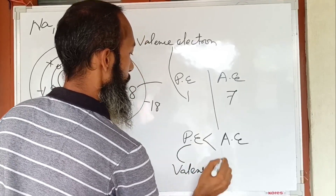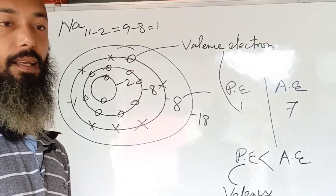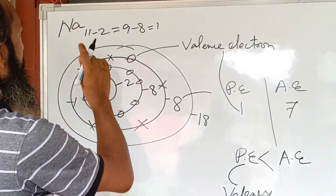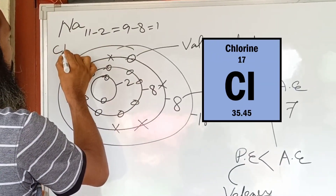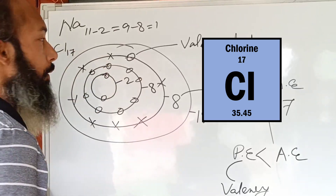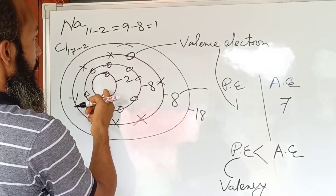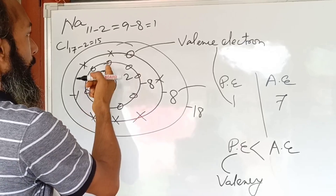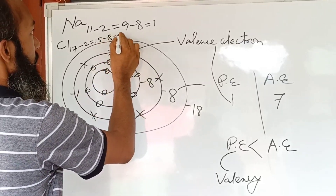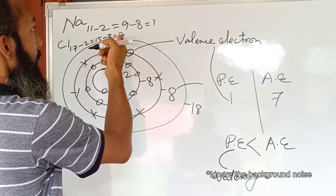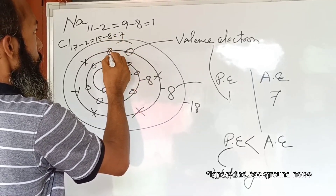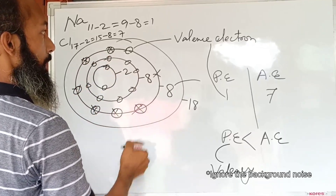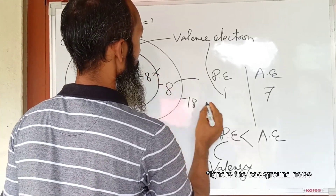Now let us consider the example of chlorine. Chlorine has 17 electrons. Two electrons enter the first shell, then eight electrons enter the second shell, leaving seven electrons remaining. These seven electrons enter the third shell — one, two, three, four, five, six, seven — and only one place lies vacant.